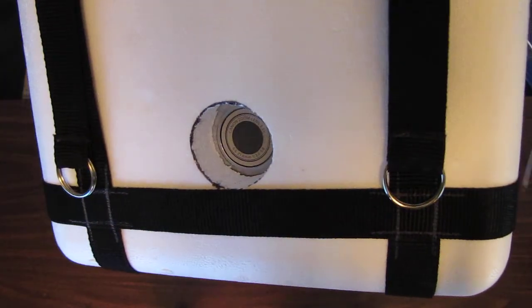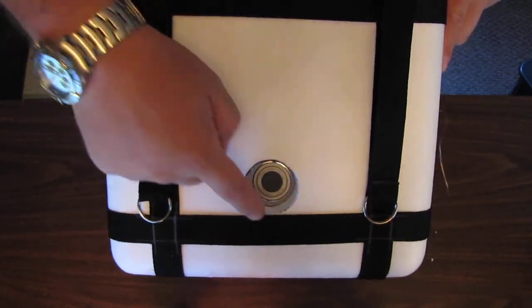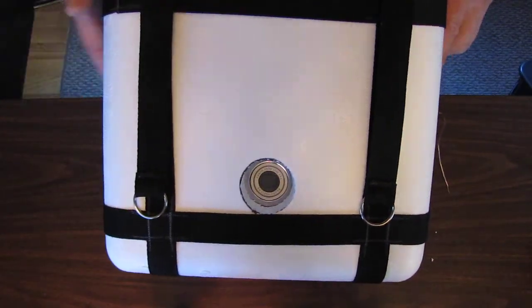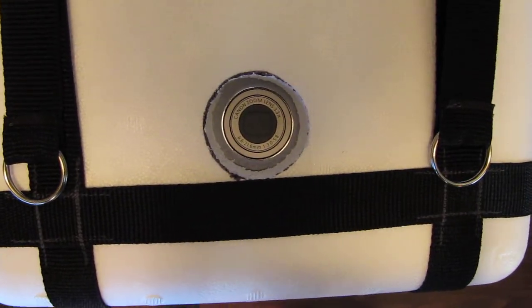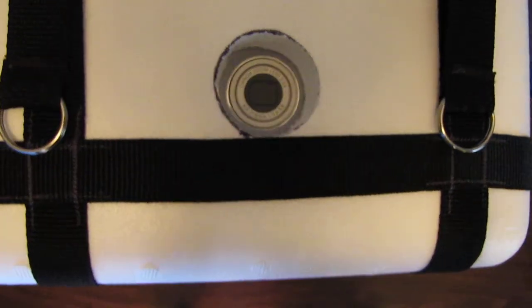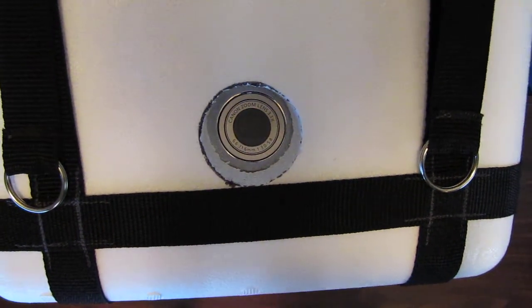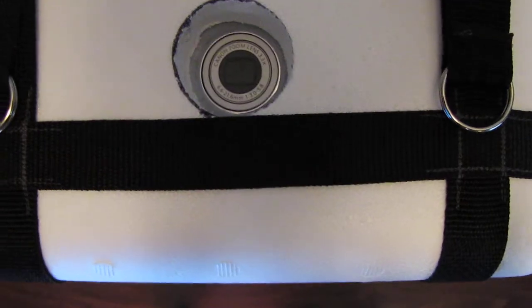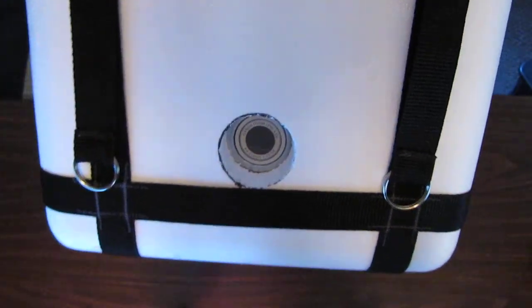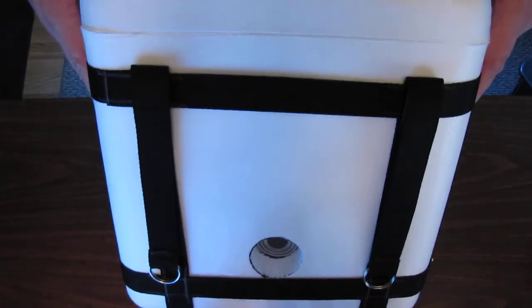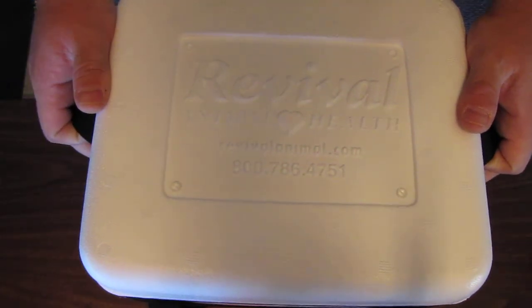You'll notice one change right off the bat. In the IHAB-1 launch, there was a 35mm lens filter that we used as a lens protector, and we noticed that we got a tremendous amount of condensation on the lens filter itself. So we have removed that for this launch, letting the camera lens be exposed to the outside, and we certainly expect that will improve and eliminate our fogging issues that we had in the IHAB-1 launch.